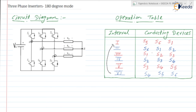At the end of the second interval, S6 turns OFF and S3 turns ON, so S1, S2, and S3 conduct during the third interval. During the fourth interval S2, S3, S4 conduct; during the fifth interval S3, S4, S5 conduct; and during the sixth interval S4, S5, S6 are in conduction mode.